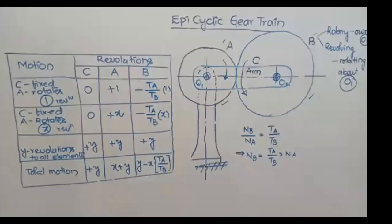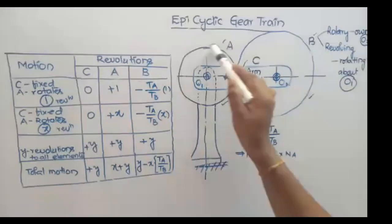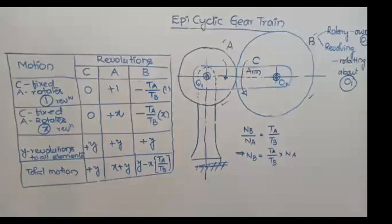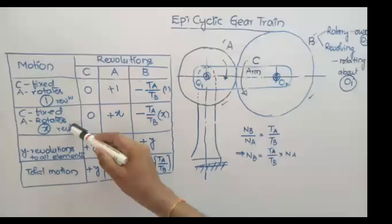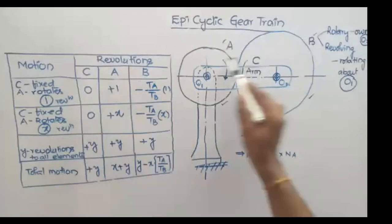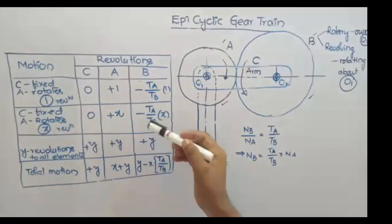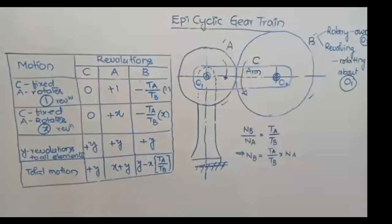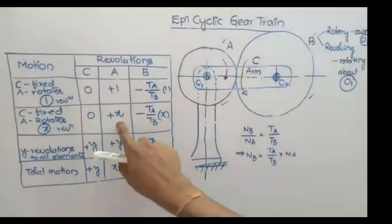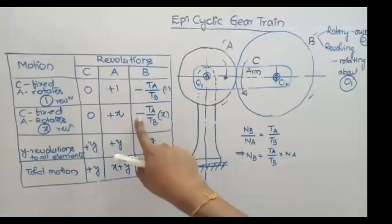That was the first motion. In the second case, arm C is again considered fixed and gear wheel A is free to rotate, but now we consider X revolutions of gear wheel A instead of one revolution. Since the arm is fixed, it completes zero revolutions. Gear wheel A completes X revolutions. Then the number of revolutions that gear wheel B, which is mating with gear wheel A, can complete equals TA by TB into X. Since it is rotating in the opposite sense, we get a minus sign: minus TA by TB into X.